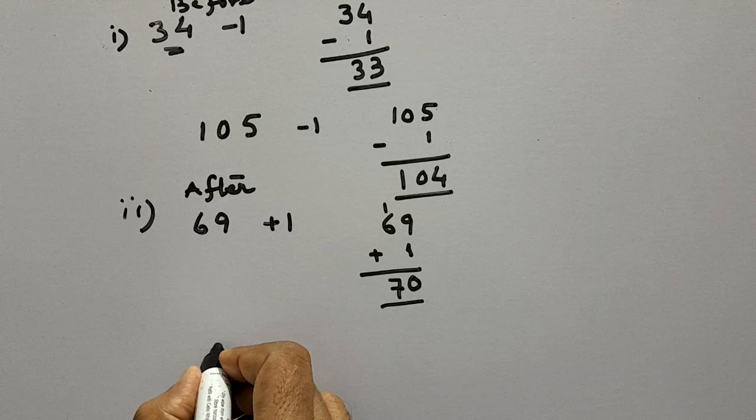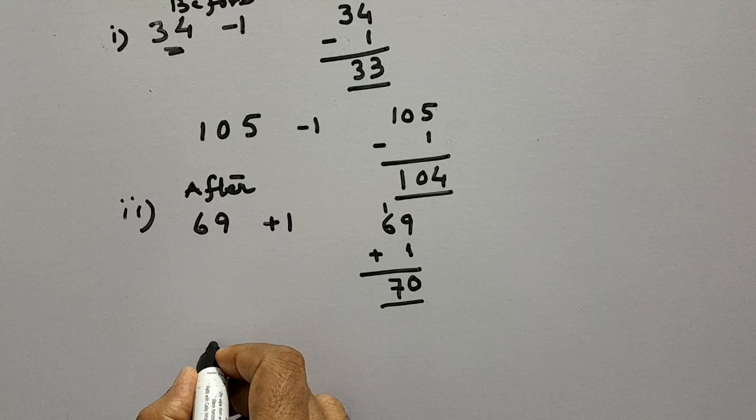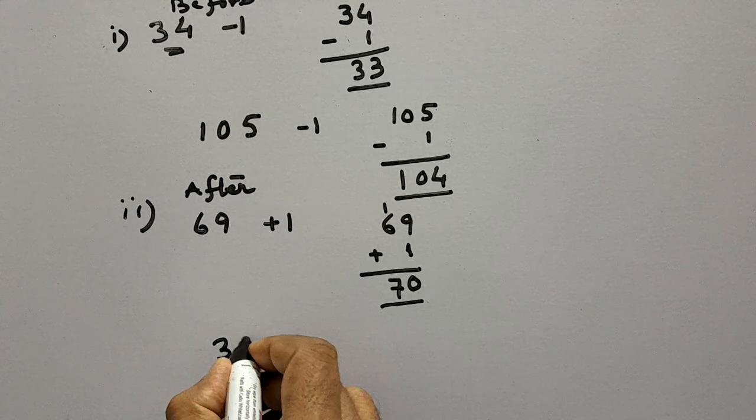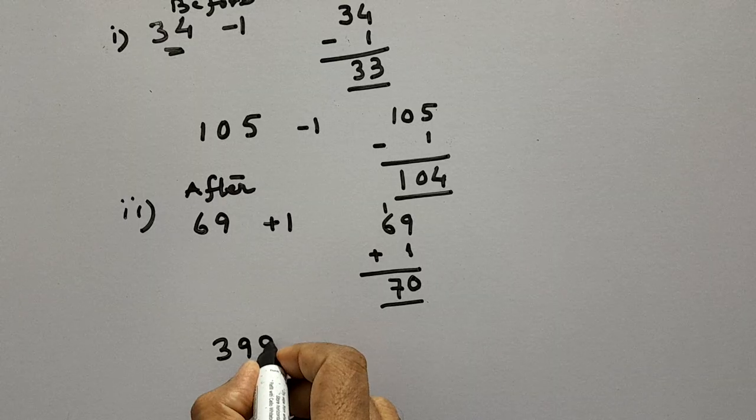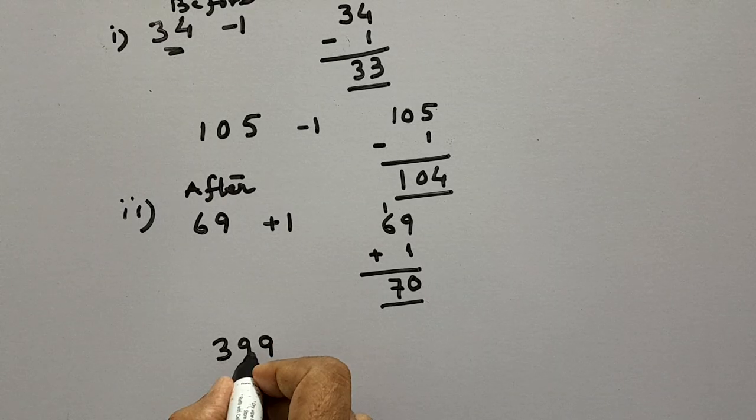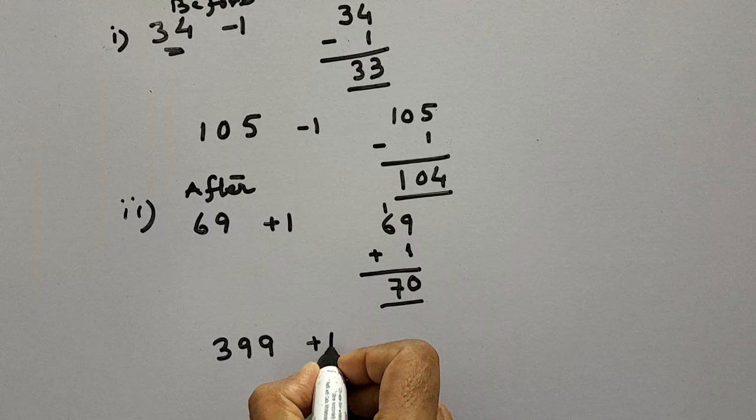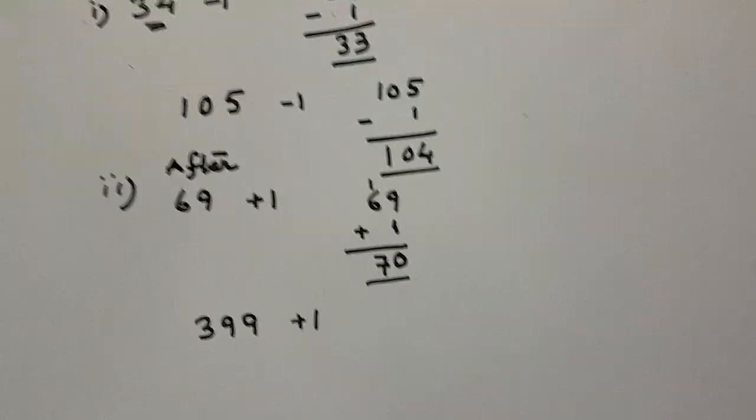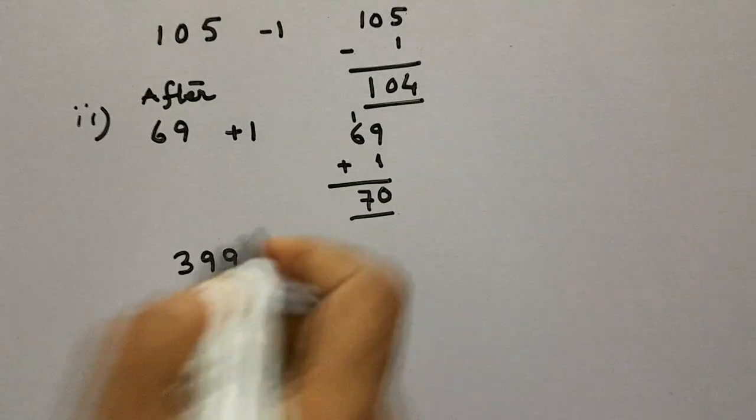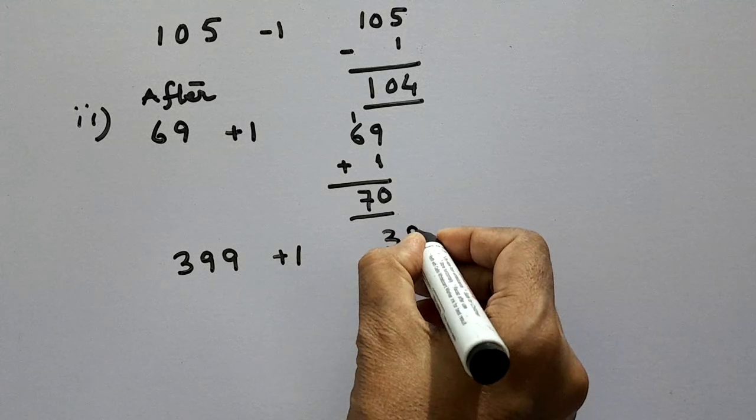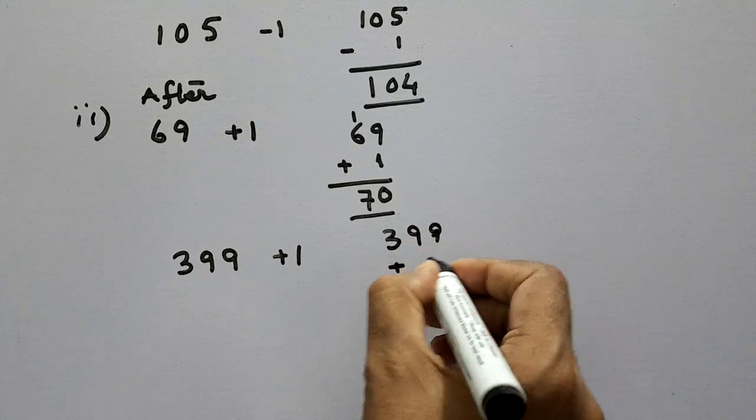So let us take one more example. 399. So we have to find the number after this. So what we will do? In the same way, we will add 1 to it. So 399 plus 1.